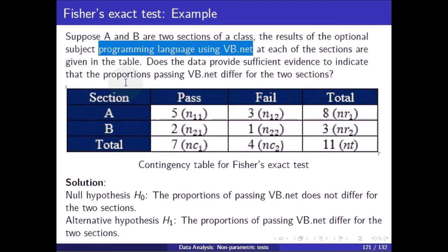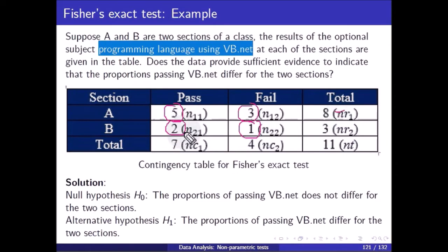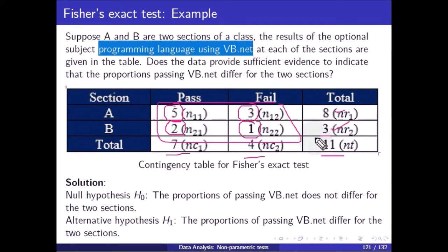Does the data provide sufficient evidence that the proportion passing VB.NET differs for the two sections? Section A: 5 pass, 3 fail (total 8). Section B: 2 pass, 1 fail (total 3). Column totals: 5 plus 2 equals 7 pass, 3 plus 1 equals 4 fail. Grand total nt equals 11.